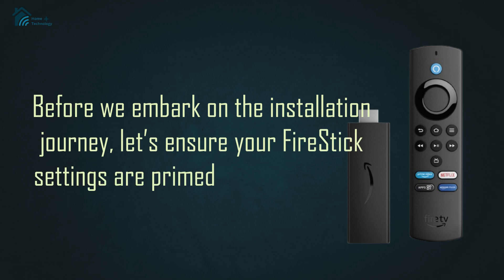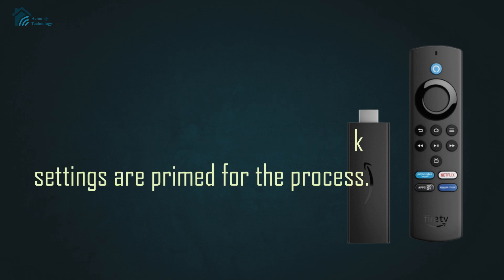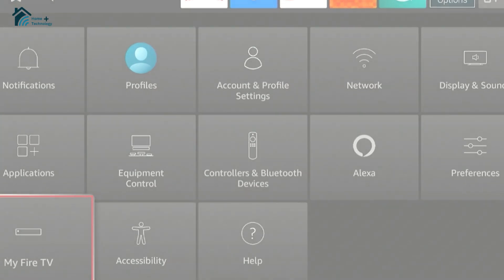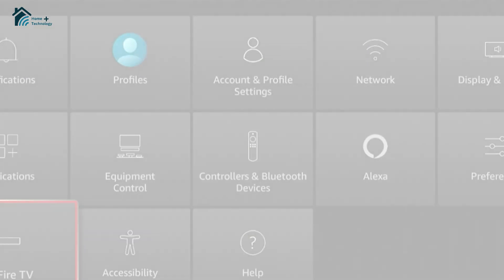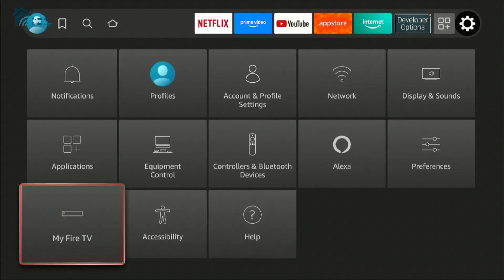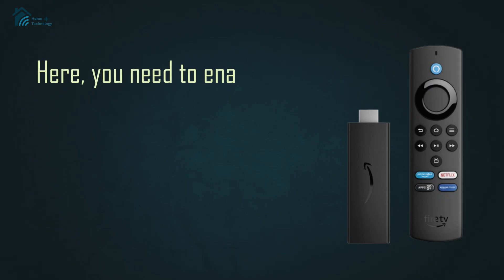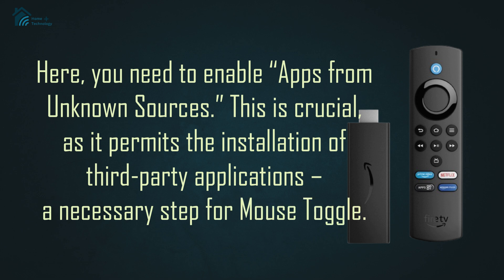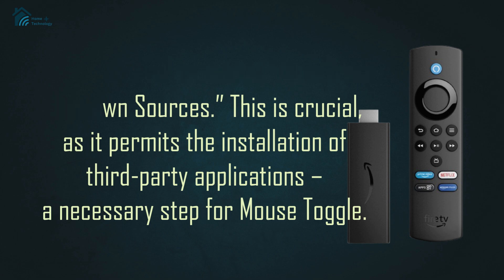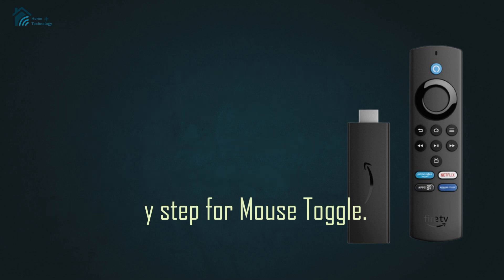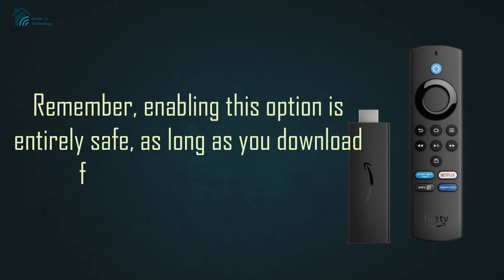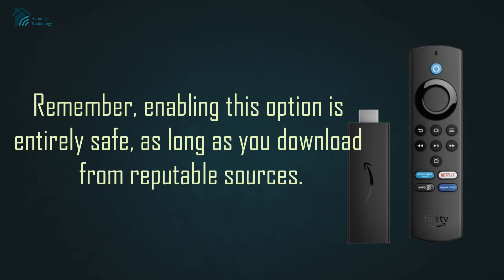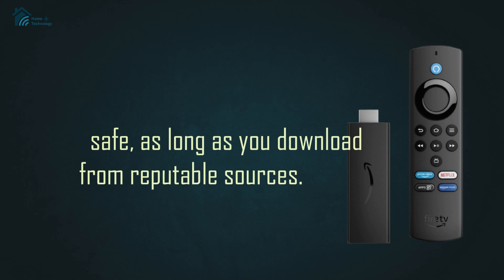Before we embark on the installation journey, let's ensure your Firestick settings are primed for the process. Begin by navigating to Settings from the home screen, then select Device or My Fire TV. Here, you need to enable apps from unknown sources. This is crucial as it permits the installation of third-party applications, a necessary step for mouse toggle. Remember, enabling this option is entirely safe as long as you download from reputable sources.